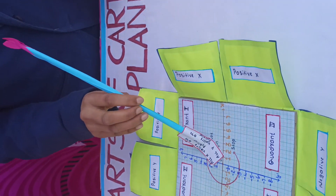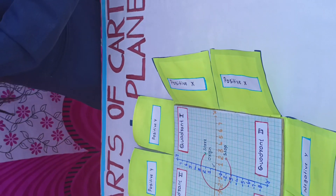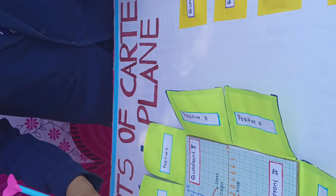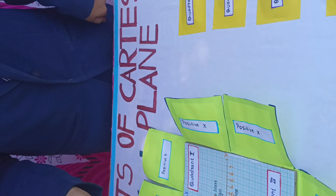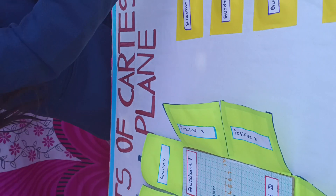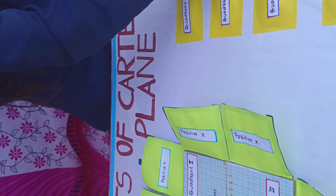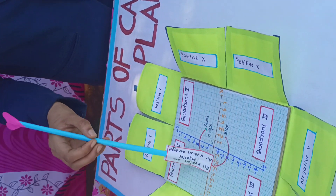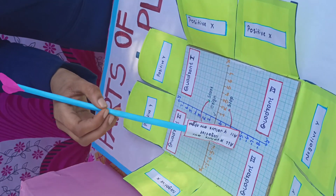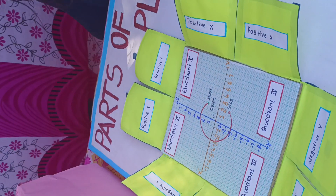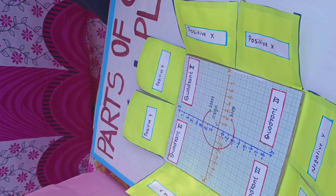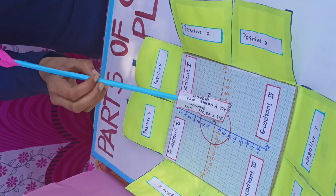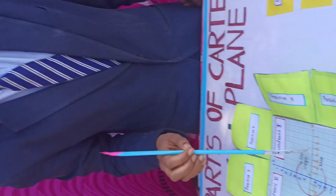In the first quadrant, the x-axis and y-axis are positive. In the second quadrant, the x-axis is negative and the y-axis is positive. In the third quadrant, both axes are negative. In the fourth quadrant, the x-axis is positive and the y-axis is negative.